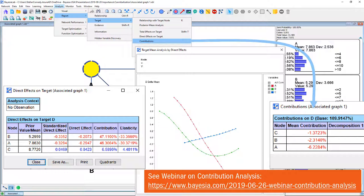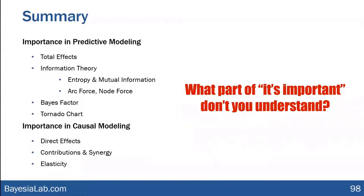We have a webinar just on that topic. That brings us to the conclusion of the causal section. We've now gone through a whole lot of concepts — at least 10 or a dozen different measures that all relate to importance. We started with total effects, then entropy, mutual information, arc force, node force, Bayes factors, different visualizations, direct effects, contributions, and elasticity. So if somebody asks you 'what part of this is important, don't you understand?' — you can reasonably challenge that notion of importance.